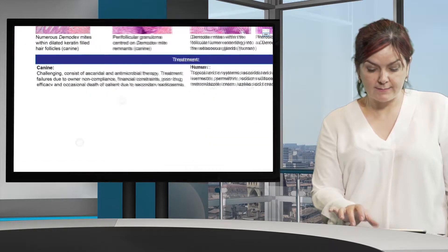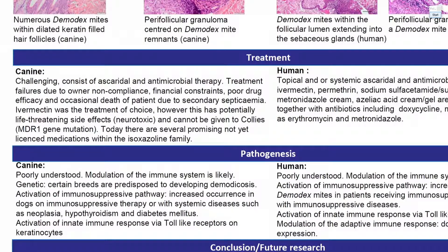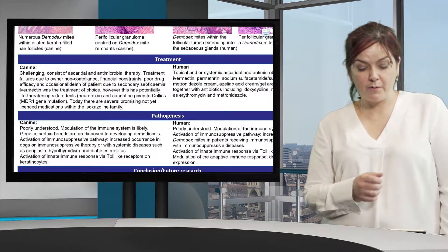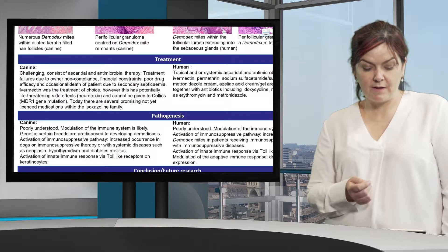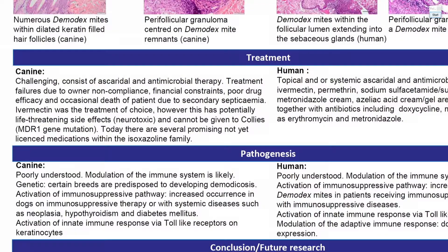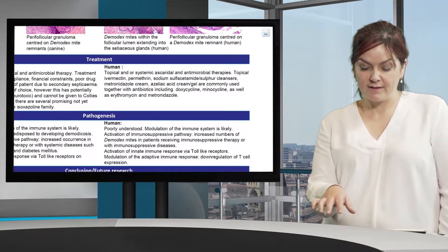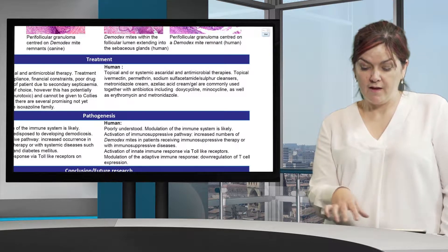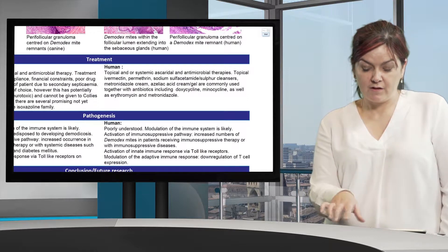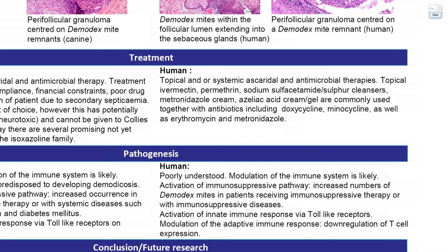Regarding treatments, this is where veterinary medicine lags behind. Treatment is challenging in dogs and consists of acaricides and antimicrobial treatment, but treatment failures are generally due to owner non-compliance, financial constraints, poor drug efficacy, and occasional patient death due to secondary septicaemia. Ivermectin was previously the drug of choice, however it has potentially life-threatening side effects, especially in collie dogs with MDR1 mutations. More promising treatments not yet licensed include the isoxazoline family — such as Bravecto (sarolaner and fluralaner). In humans, topical or systemic acaricides and antimicrobial therapies are available, including topical ivermectin, permethrin, sodium sulfacetamide or sulfur cleansers, metronidazole, azelaic acid cream or gel, and antibiotics like doxycycline, minocycline, erythromycin, and metronidazole.